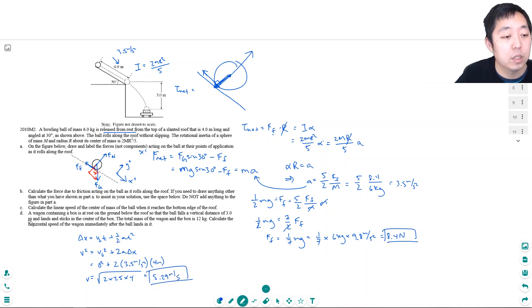A wagon containing a box is at rest in the ground below so that the ball falls a vertical distance of 3 meters and lands and sticks to the center of the box. The total mass of the wagon and the box is 12 kilograms. Calculate the horizontal speed in the wagon immediately after the ball lands on it.